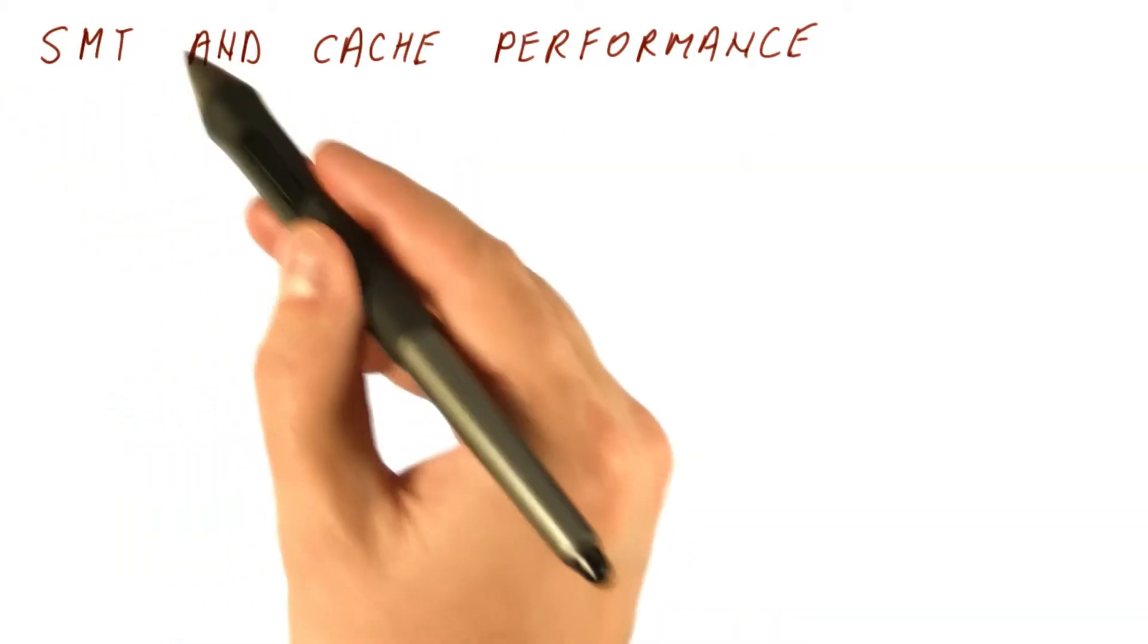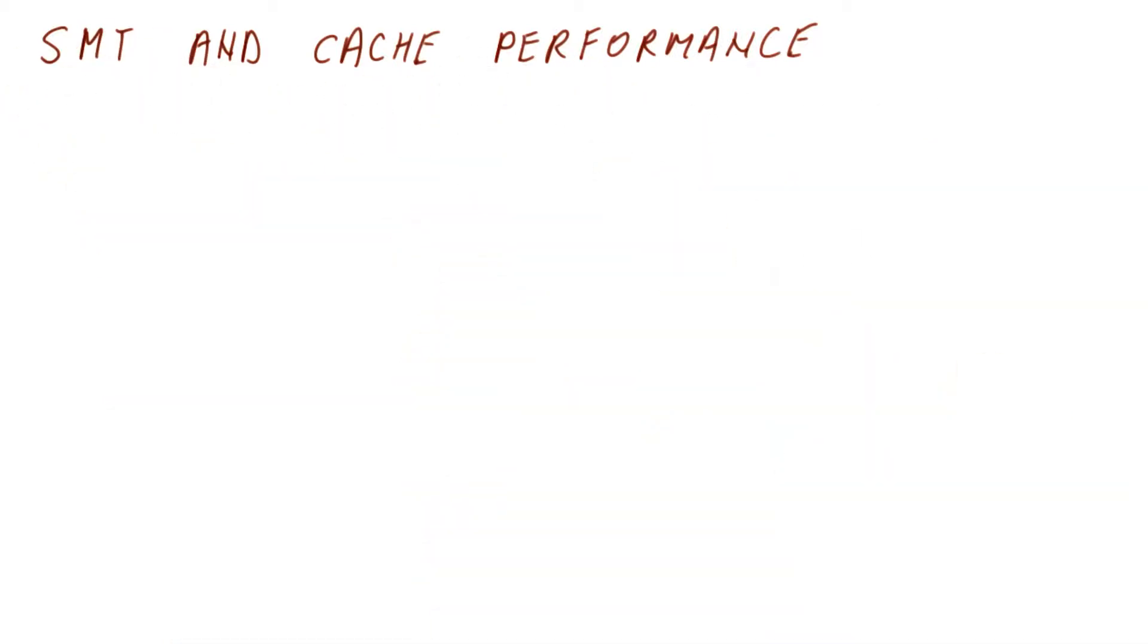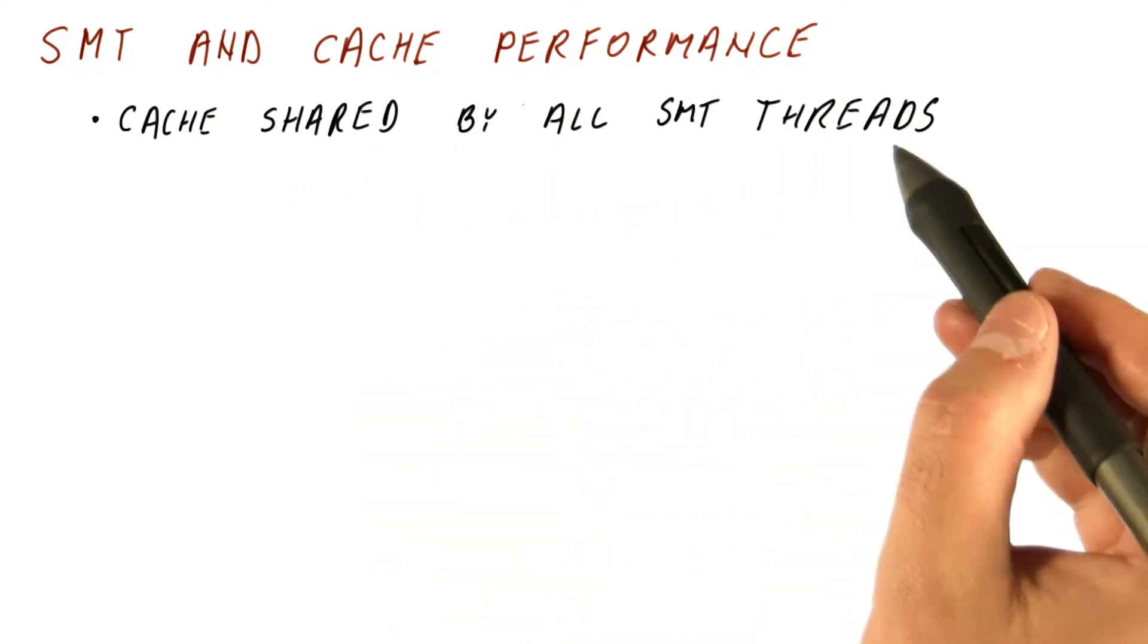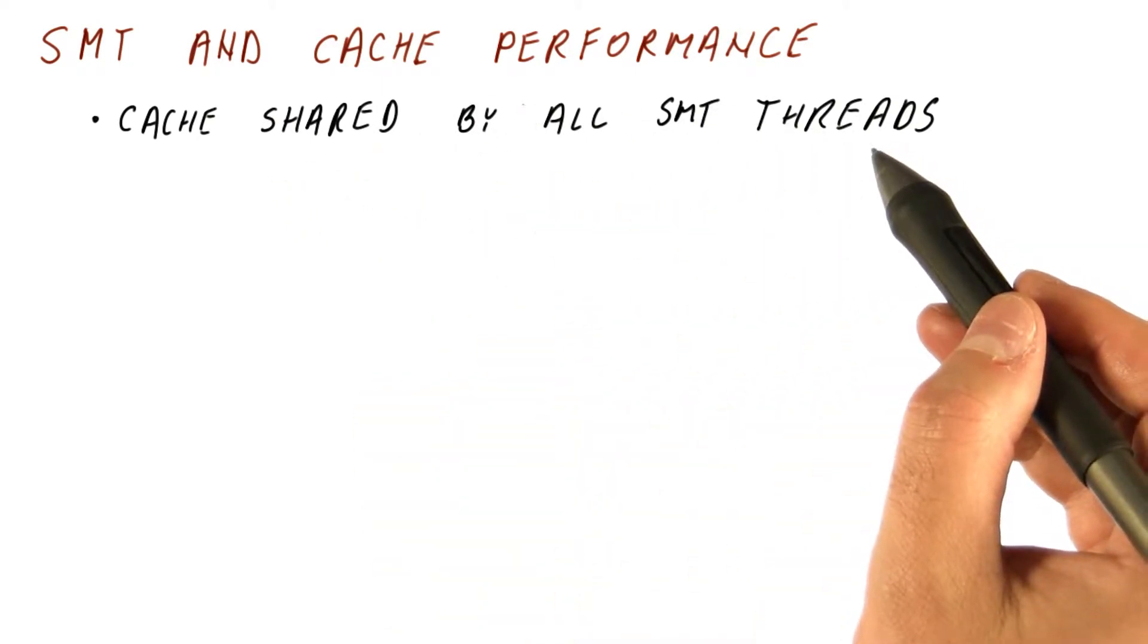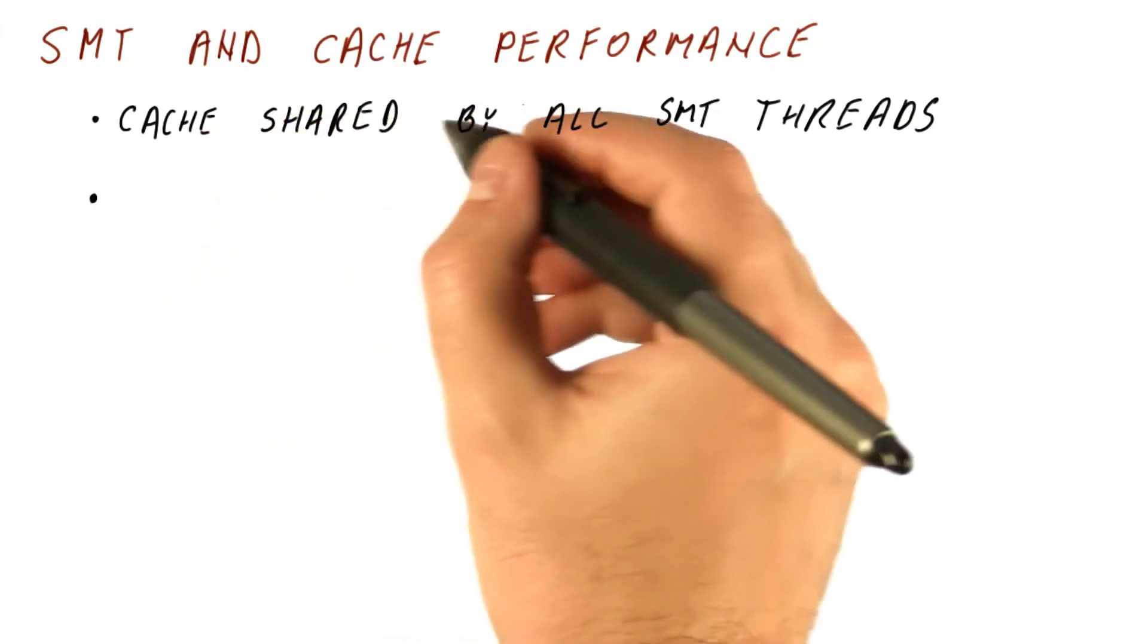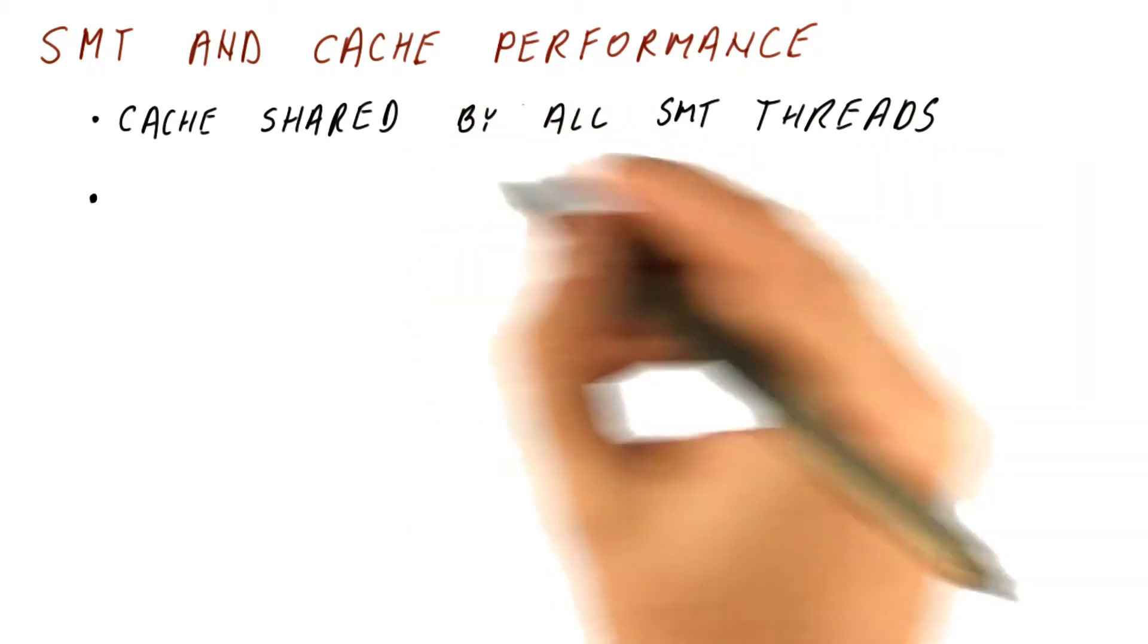Now let's look at the relationship between SMT and cache performance. The cache of the core is shared by all of the SMT threads that are currently active on it. For example, if we have two-way SMT, then the cache is shared by both of the threads. That gives us some good and some bad properties.